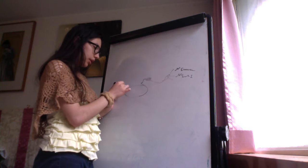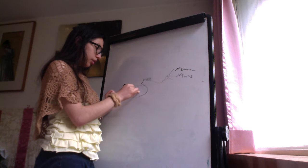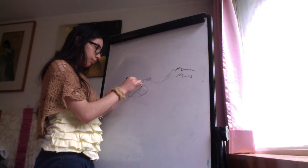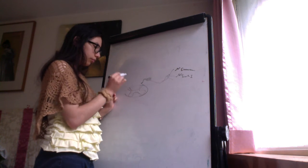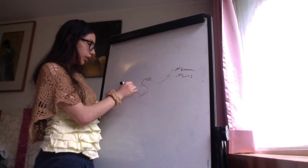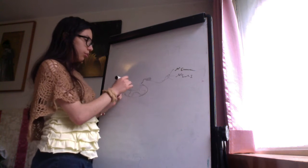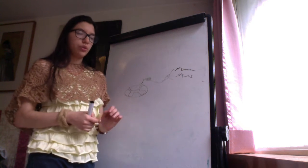This is the spinal cord, with the posterior horn and anterior horn. Next, the axons run in the posterior funiculus to the gracilis or cuneatus fascicles.